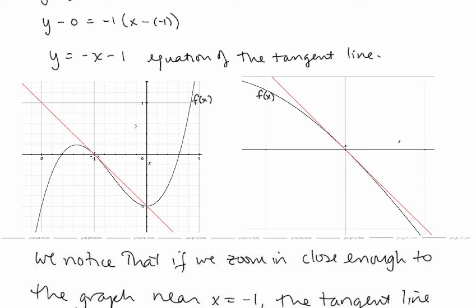If we move far from x equals negative 1, the tangent line and the original function are not at all alike. So this linear approximation is a local linear approximation, and it's only valid for x values near the point of tangency.